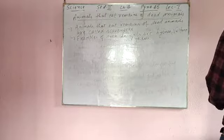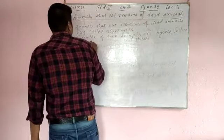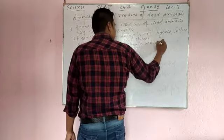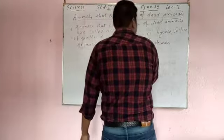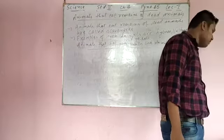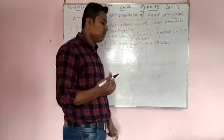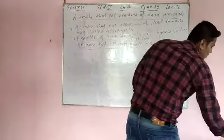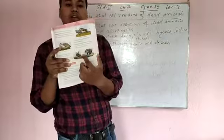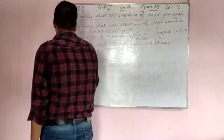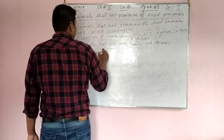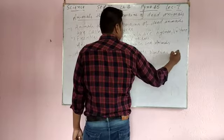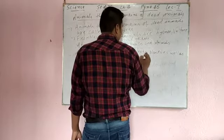Now the next topic is animals that eat both plants and animals. Animals like bears and rats — bears eat parts of a plant also, and bears eat fish also. You can see the picture in your book. Bears eat parts of a plant as well as the flesh of other animals. So animals like bears and rats eat plants as well as other animals.